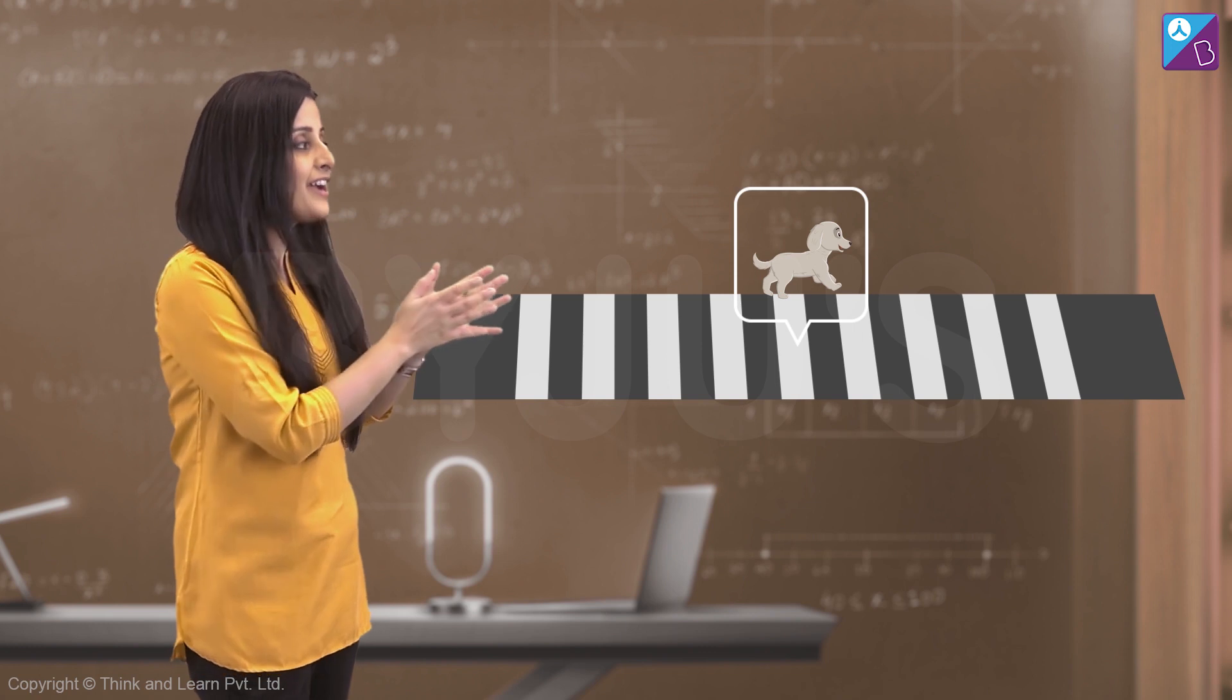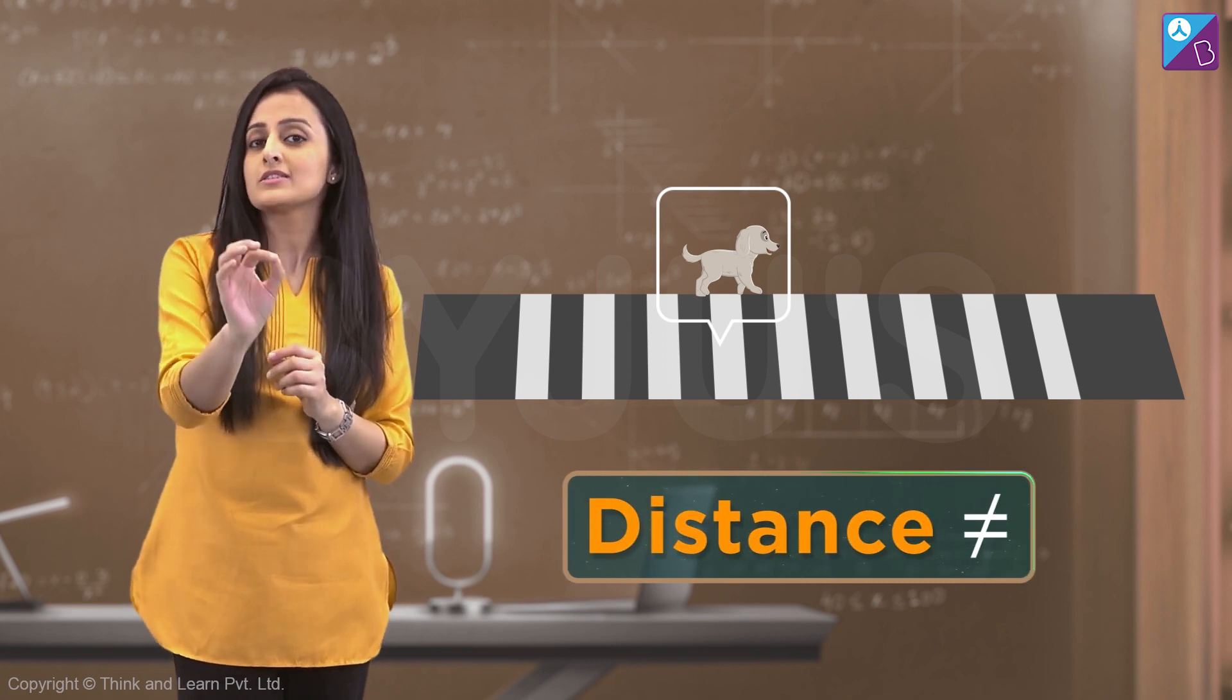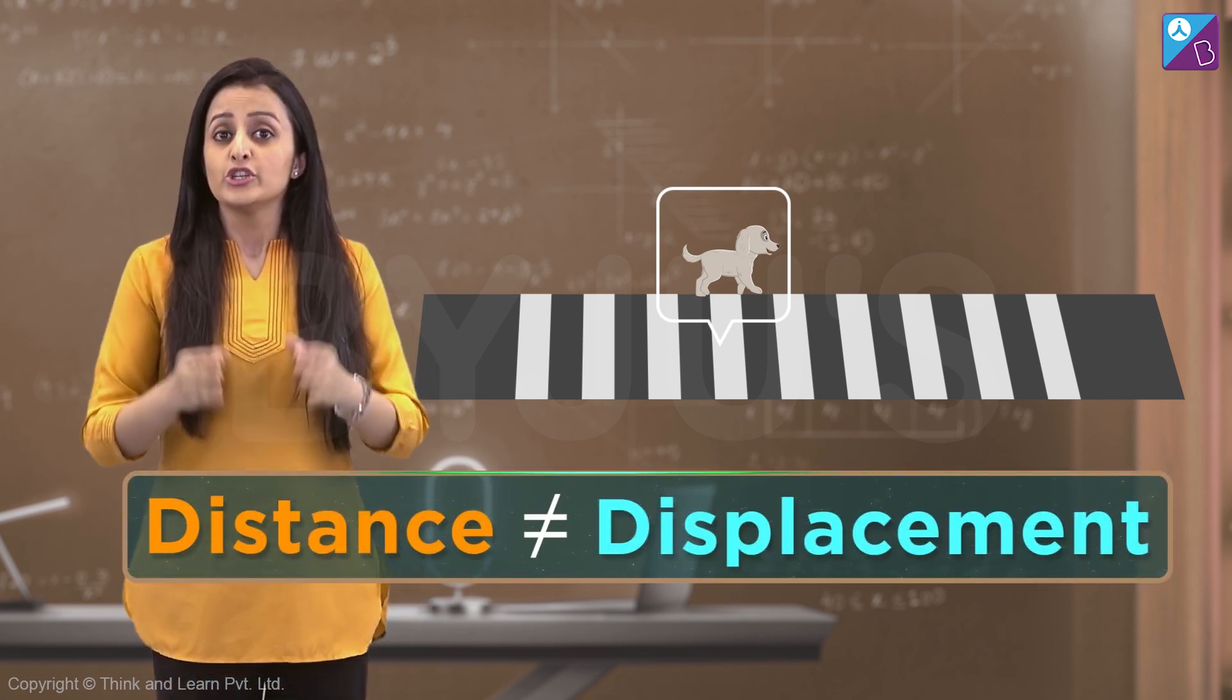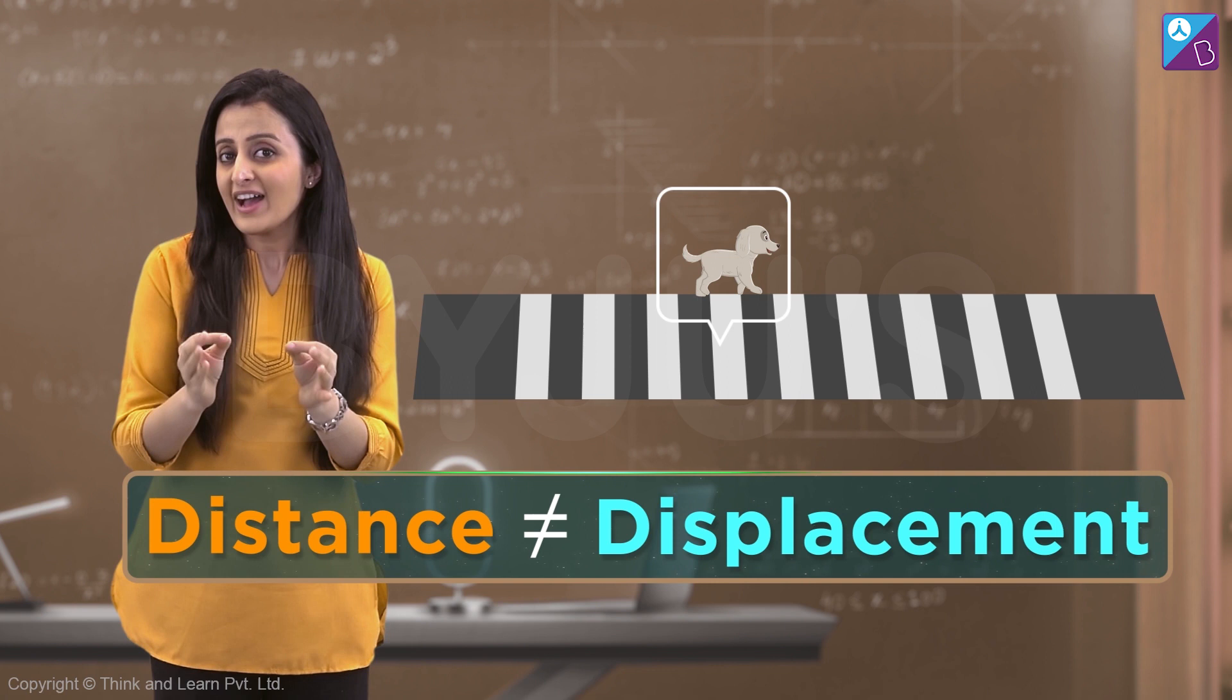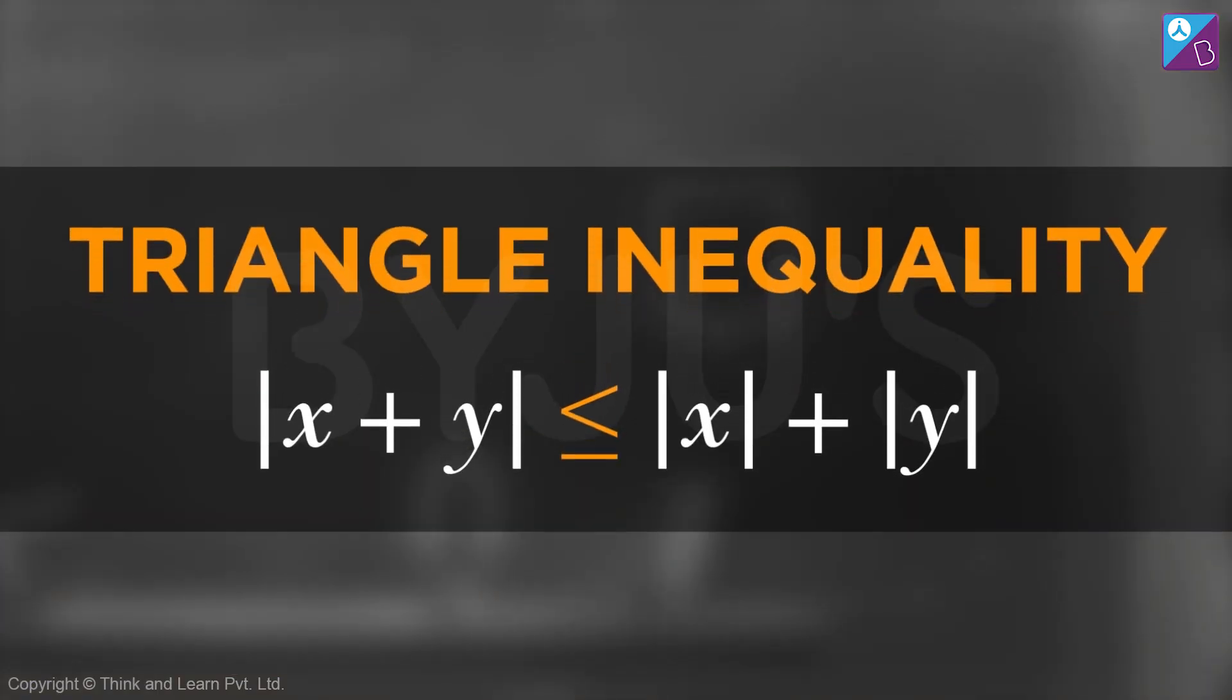Coming straight to the point, how much travel do you think the puppy had to do between all that running forward and backward? You and I both know that the total distance travelled is not always the same as displacement. Using this exact fact, we are going to justify the very famous triangle inequality.